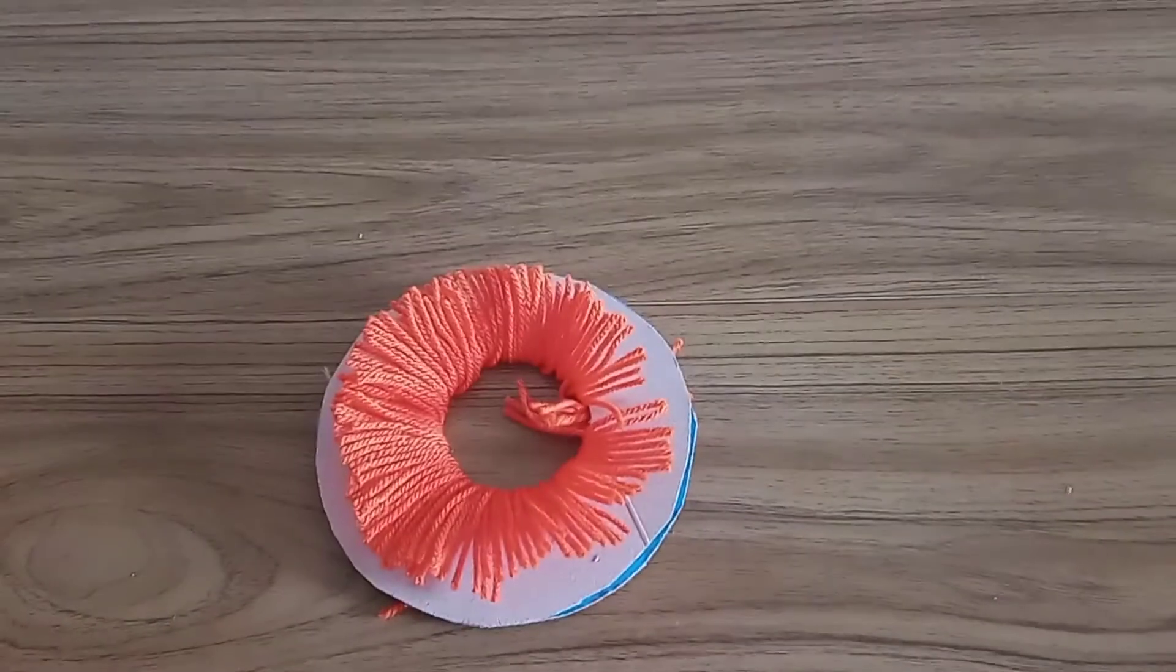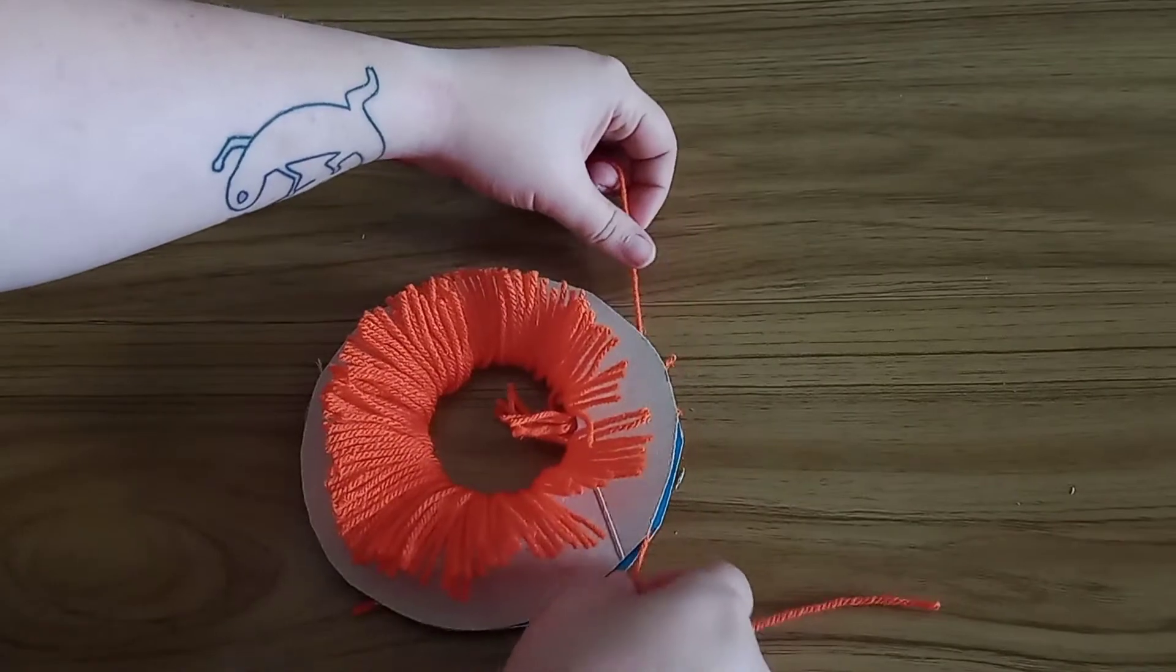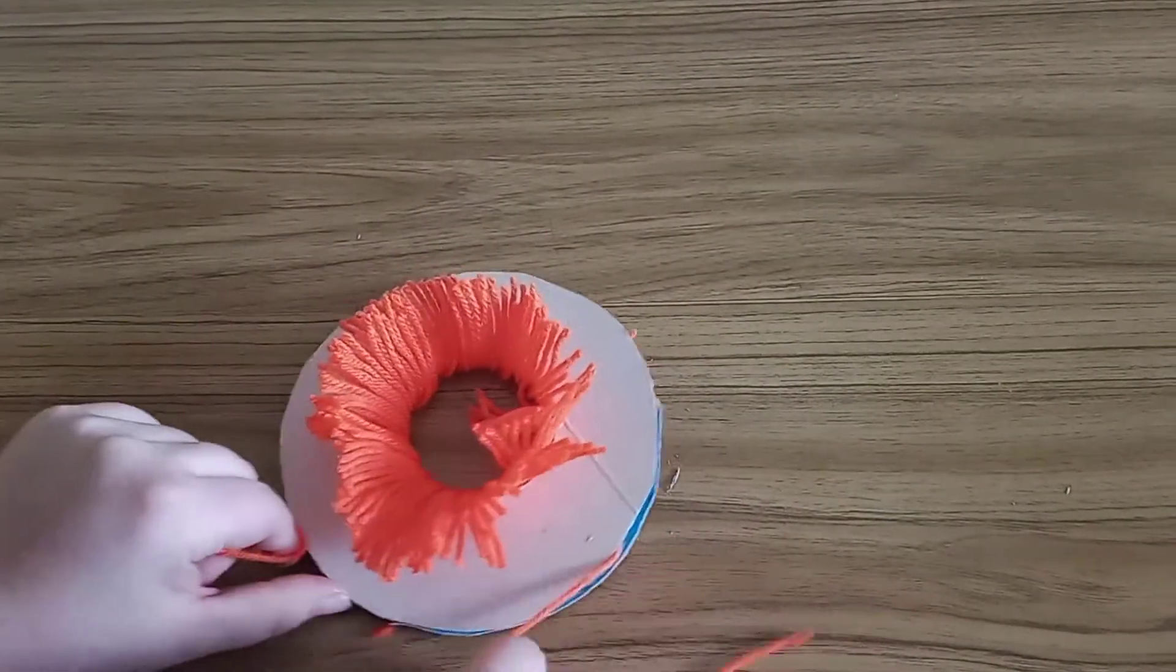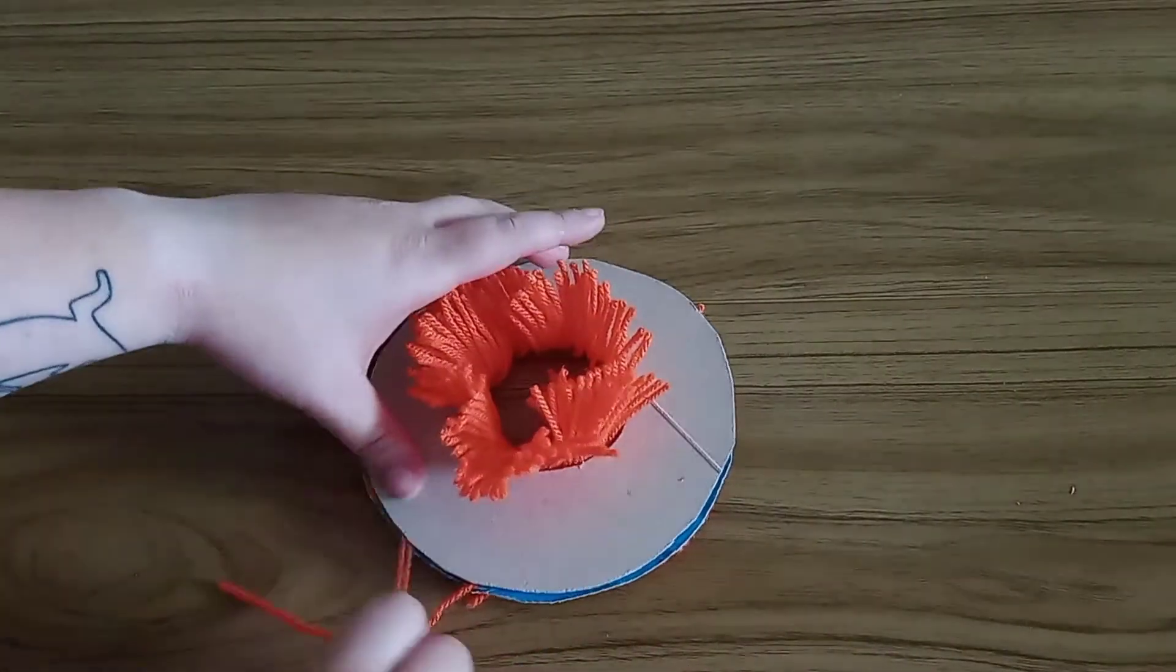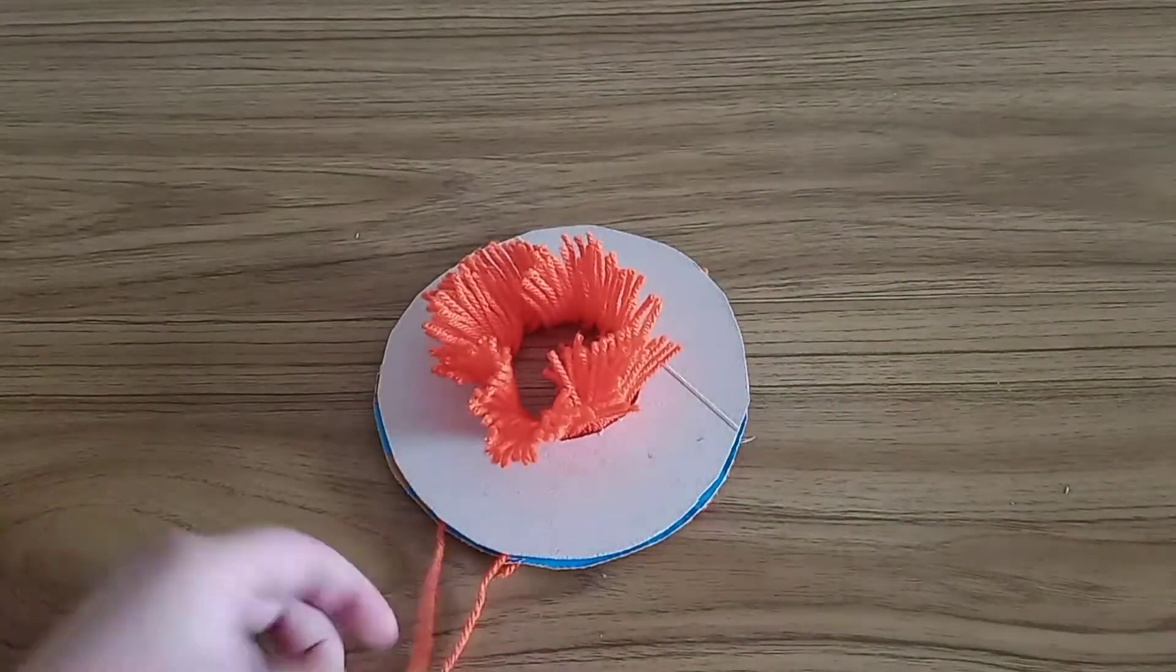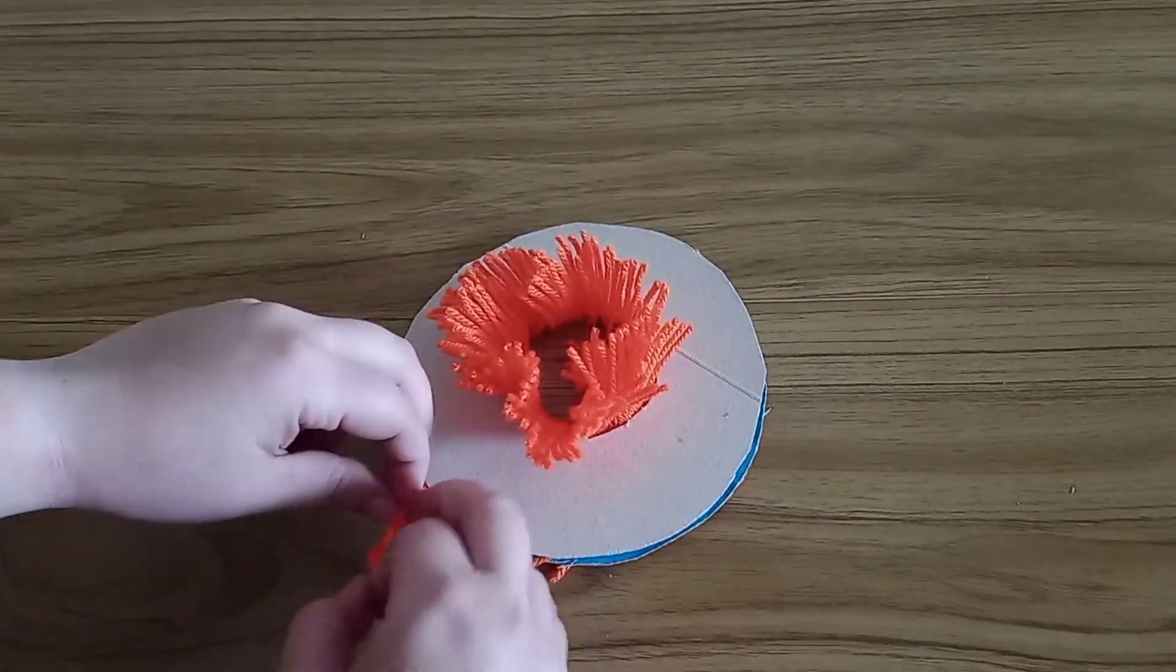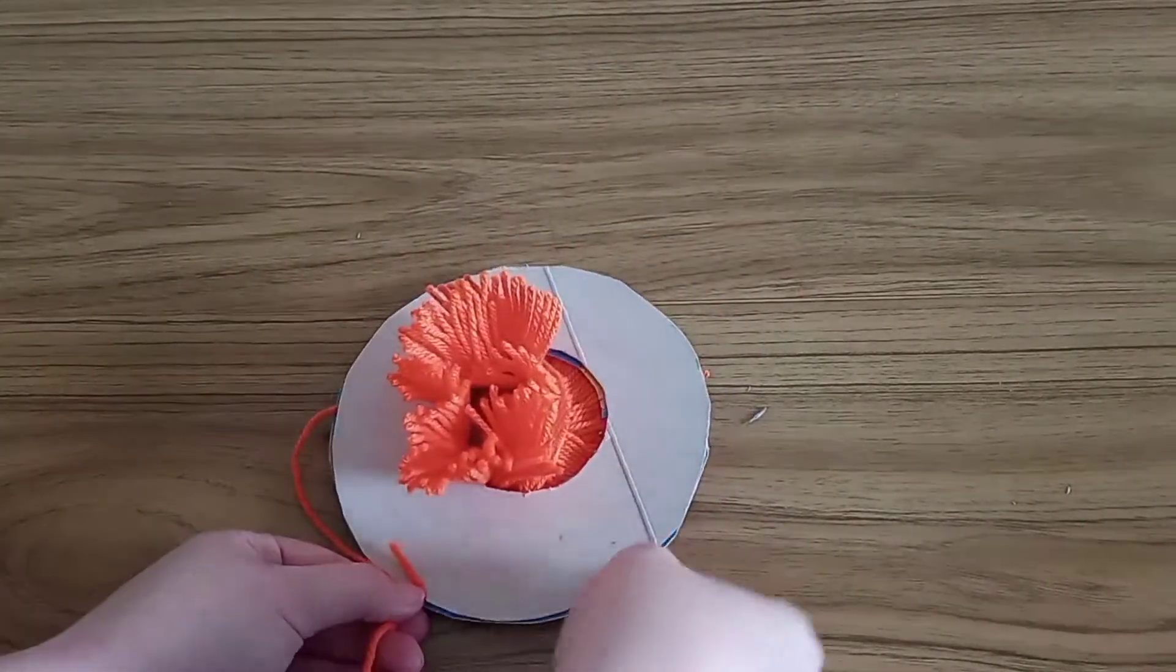Once all the pieces of wool have been cut, you're then going to take the piece of string that you cut earlier and put it between the two layers of cardboard all the way around. You don't want to hit the wool in the middle just yet because you're going to make it go crooked. Then you're going to lift the top layer of cardboard and tie a knot to secure that wool in place.